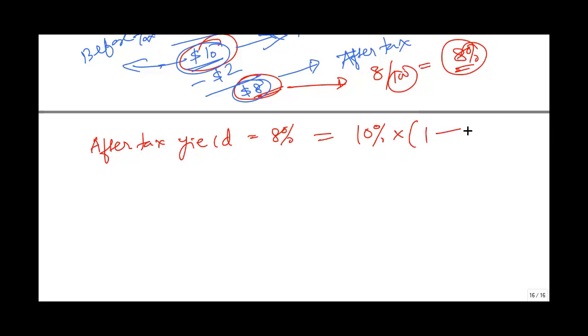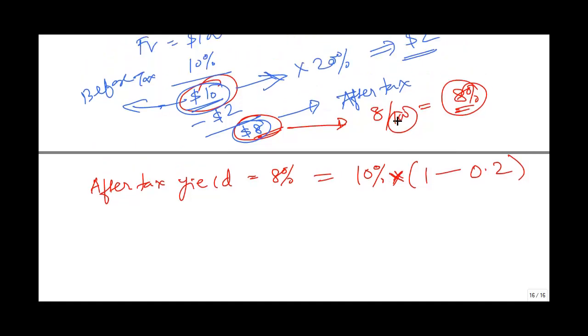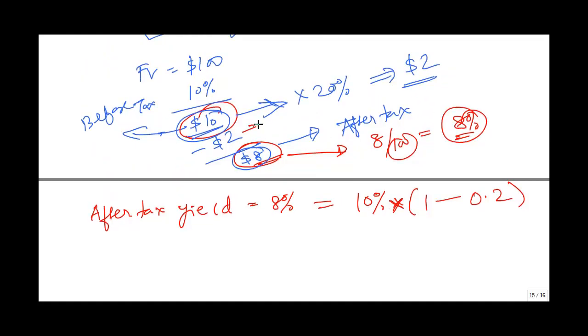You subtract 0.2. You are subtracting 2, which comes from 20% times 10. So 0.2 is 20%, which is your tax rate.